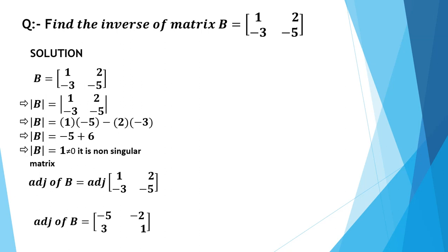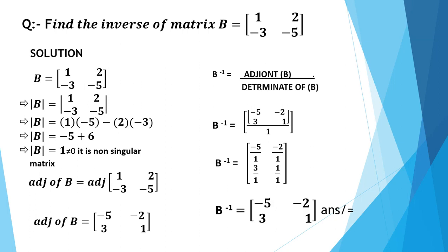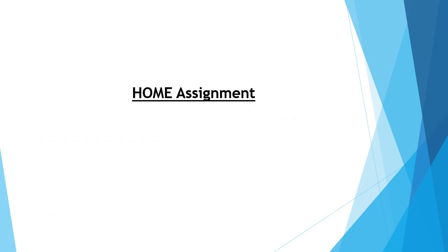Now we apply the formula for multiplicative inverse. B inverse equals adjoint of B divided by determinant of B. Substituting the values: we divide all four entries of the adjoint matrix by 1. Therefore B inverse equals [-5, -2; 3, 1], which is our required answer.